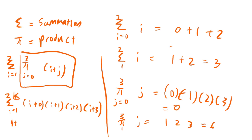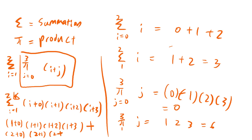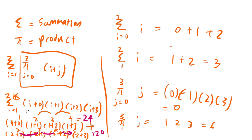Now we can solve this part. For i equals 1: (1+0) times (1+1) times (1+2) times (1+3), which is 1 times 2 times 3 times 4, giving 24. For i equals 2: (2+0) times (2+1) times (2+2) times (2+3), which is 2 times 3 times 4 times 5, giving 120. The total answer is 24 plus 120, which equals 144.